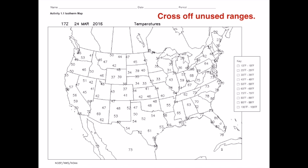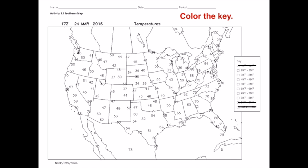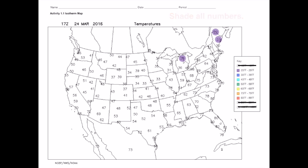To draw the isotherms, the first thing we'll do is cross off from the key any temperature ranges we won't be using. Once we've eliminated the temperature ranges that don't appear on the map, it's time to choose a color scheme for our key. Most people use warm colors like red to represent the high temperatures and blues and purples for the cooler temperatures. Once we've assigned a color for each temperature range it's time to go around the map and shade in each number the color that it needs to be.